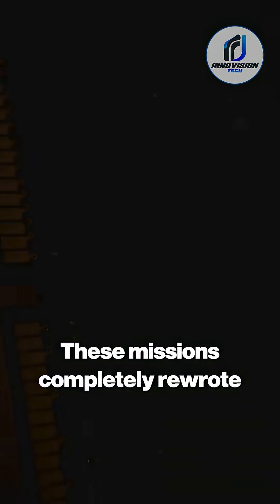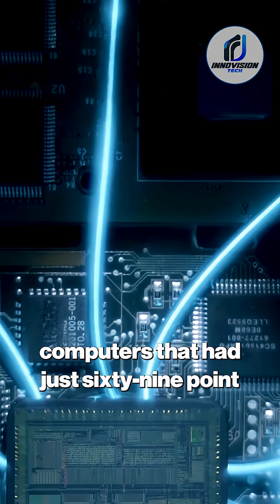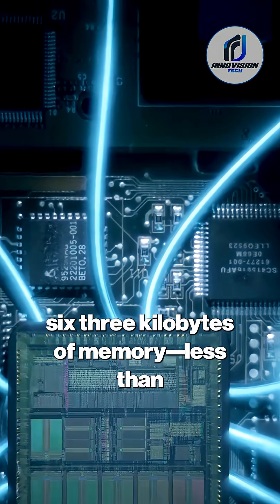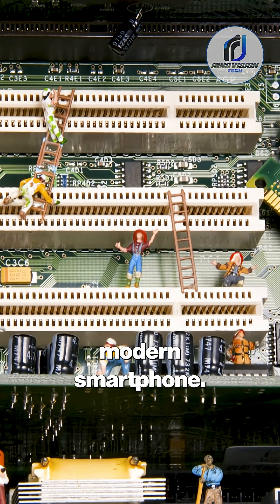These missions completely rewrote planetary science textbooks, all accomplished with custom-built computers that had just 69.63 kilobytes of memory—less than one millionth of a single photo taken by a modern smartphone.